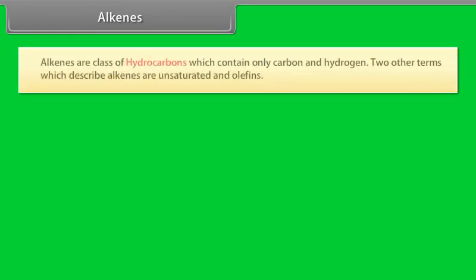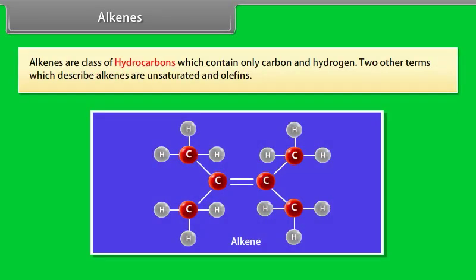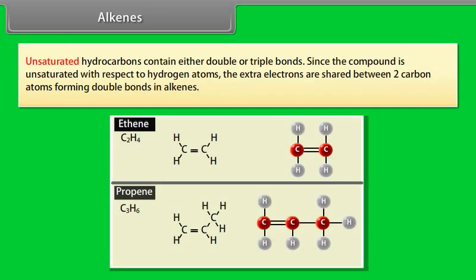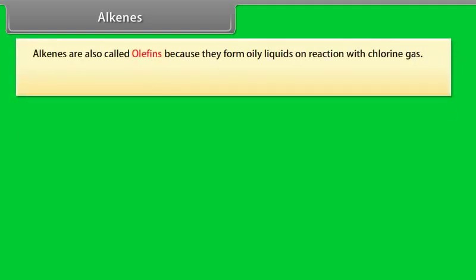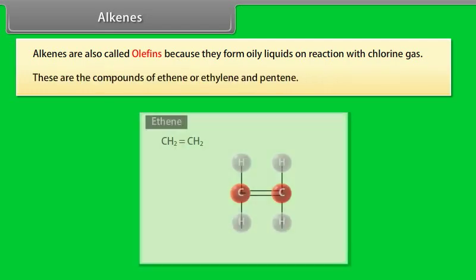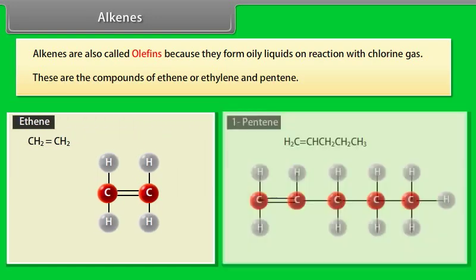Alkenes are a class of hydrocarbons which contain only carbon and hydrogen. Two other terms which describe alkenes are unsaturated and olefins. Unsaturated hydrocarbons contain either double or triple bonds. Since the compound is unsaturated with respect to hydrogen atoms, the extra electrons are shared between two carbon atoms forming double bonds in alkenes. Alkenes are also called olefins because they form oily liquids on reaction with chlorine gas. These are the compounds of ethene or ethylene and pentene.